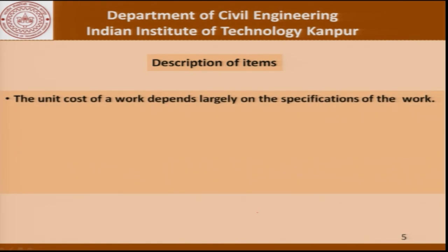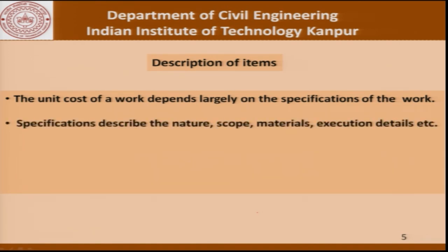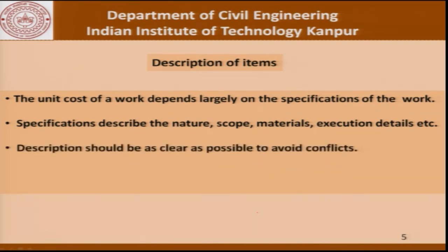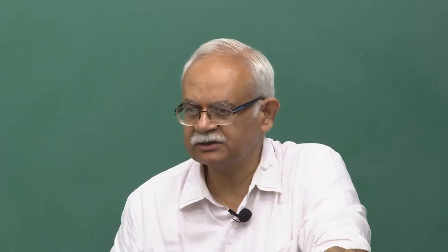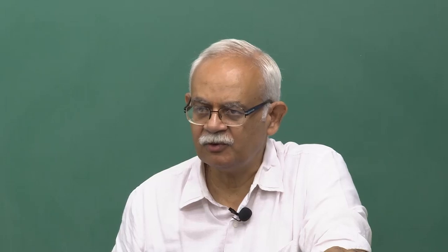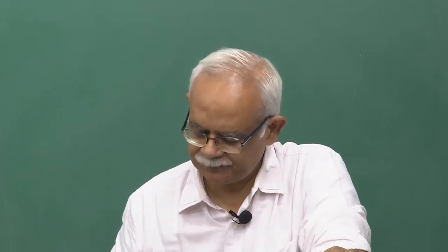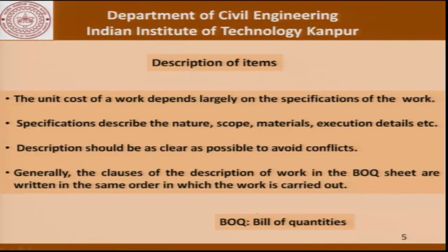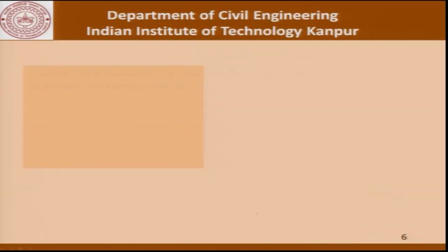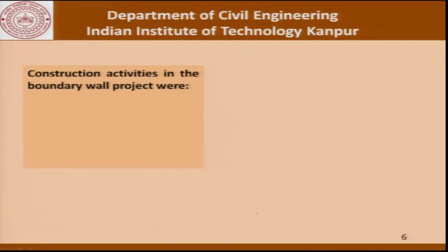The description of the items — the unit cost of an item largely depends on the specifications of the work. The specifications describe the nature, scope, materials, execution details and so on. The description should be as clear as possible to avoid conflicts, and we will see in the discussion today where we need to be careful when describing an item. Generally, the clauses of the description of an item are included in the BOQ — the bill of quantities sheet — and should be written more or less in the order in which the work is to be carried out. Now let us go back to the example of the boundary wall project.